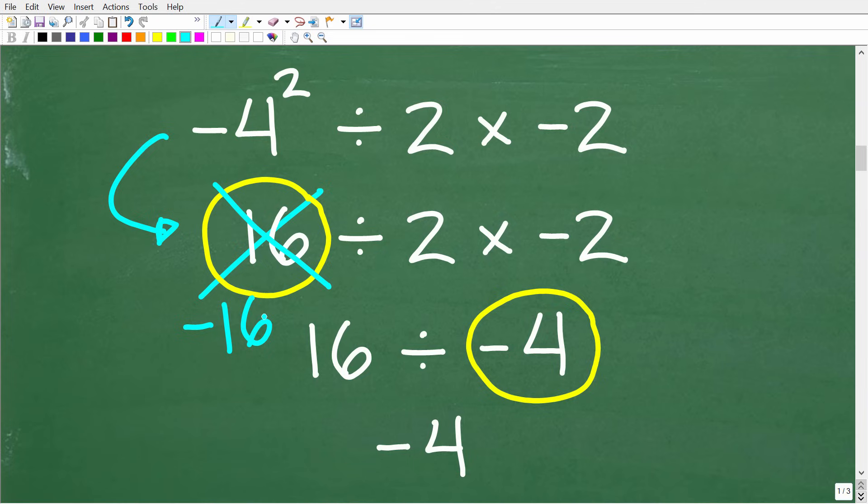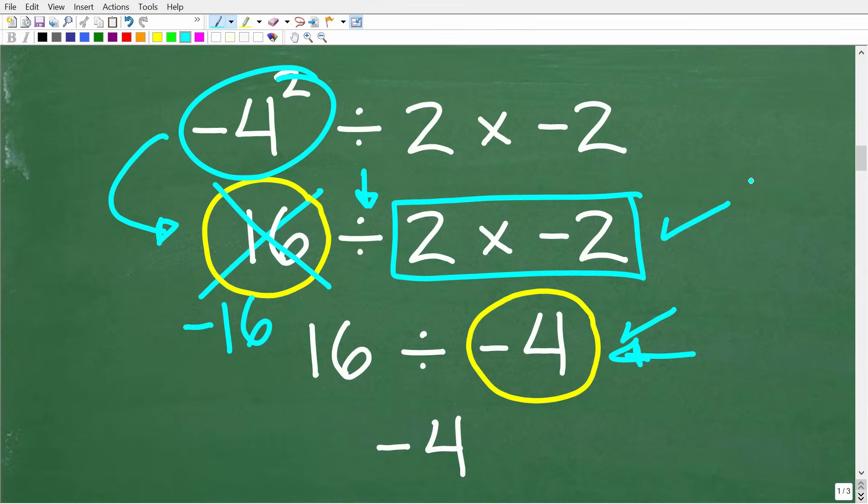Now, there is another error here, and that error is right here. So even if this was a positive 16, this person multiplied before division. That is incorrect when it comes to the order of operations. So this is error number 2. Okay, so we need to correct this error and this error, and put this all together to get the right answer.